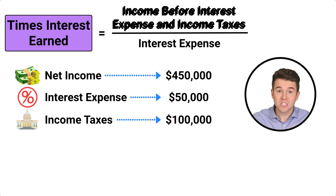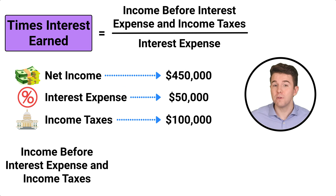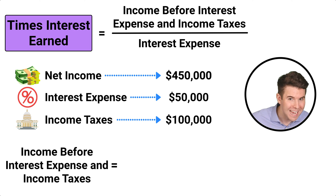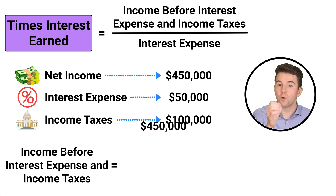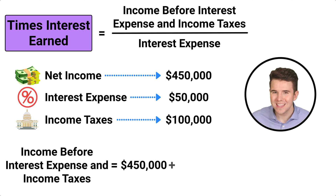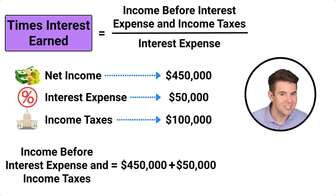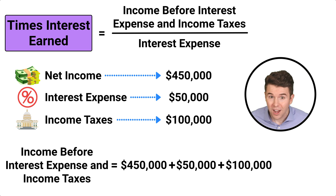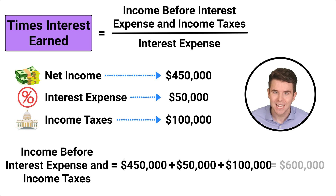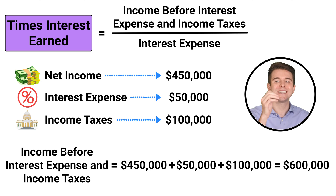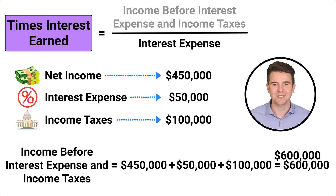First, to compute income before interest expense and income taxes, we take $450,000 of net income and add back interest expense of $50,000 and add back income taxes of $100,000 to get $600,000.